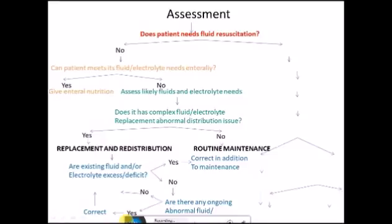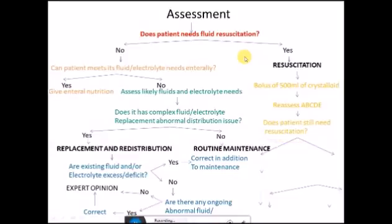Now the first question: does patient need resuscitation? If the answer is yes, then obviously resuscitate. How? You will give 500 ml bolus of crystalloid stat. Then again you will reassess ABCDE: airway, breathing, circulation, disability, and maybe blood glucose.